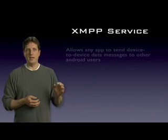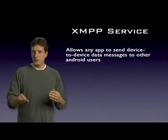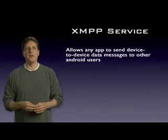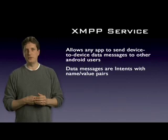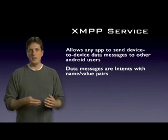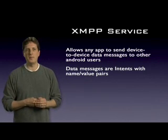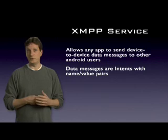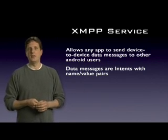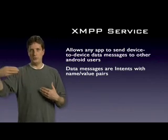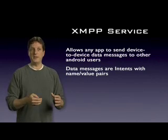The XMPP service allows any application to send device-to-device data messages to any user who's running Android on their device. That data can be whatever information makes sense for the application. So for a multiplayer game, that might be that I've moved my knight to a particular location, or whatever makes sense for the game. But it could also be something else like geographic information. So with appropriate permissions and security, the user could send their location to their buddies so that their buddies could actually see where they are at any given time and plot that information on a map.